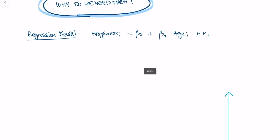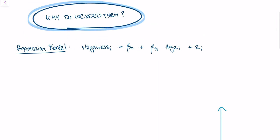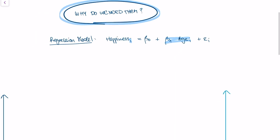So we have a regression model that says the happiness of a person, this person is called I, depends on his age. And that is our very simple model.